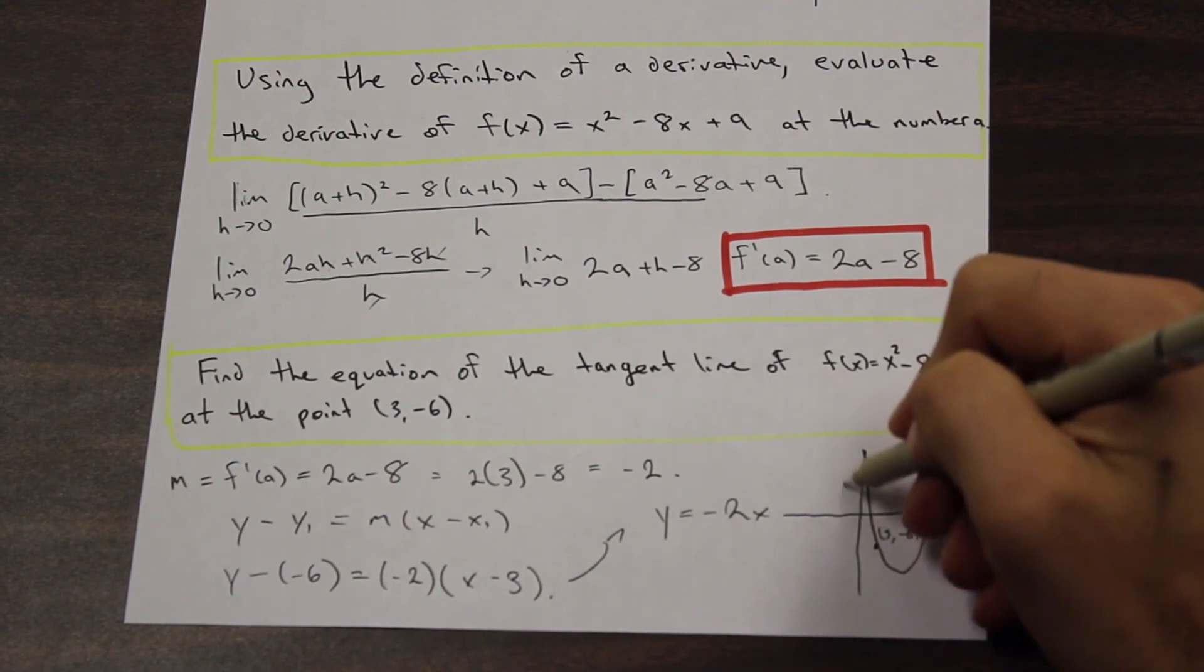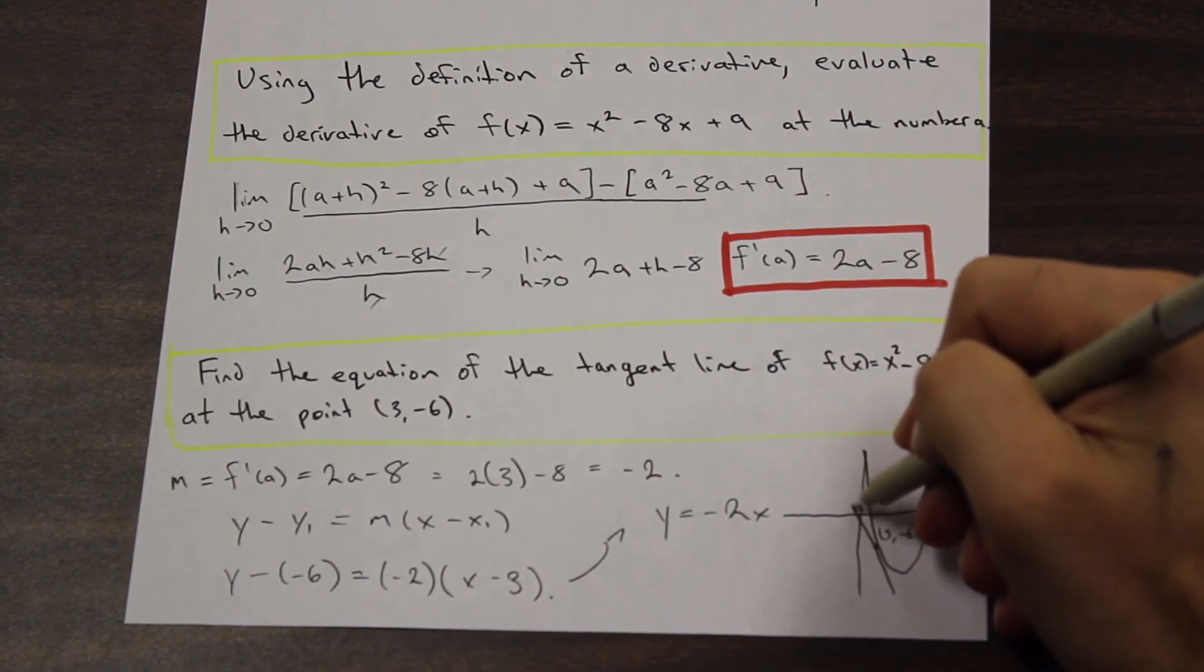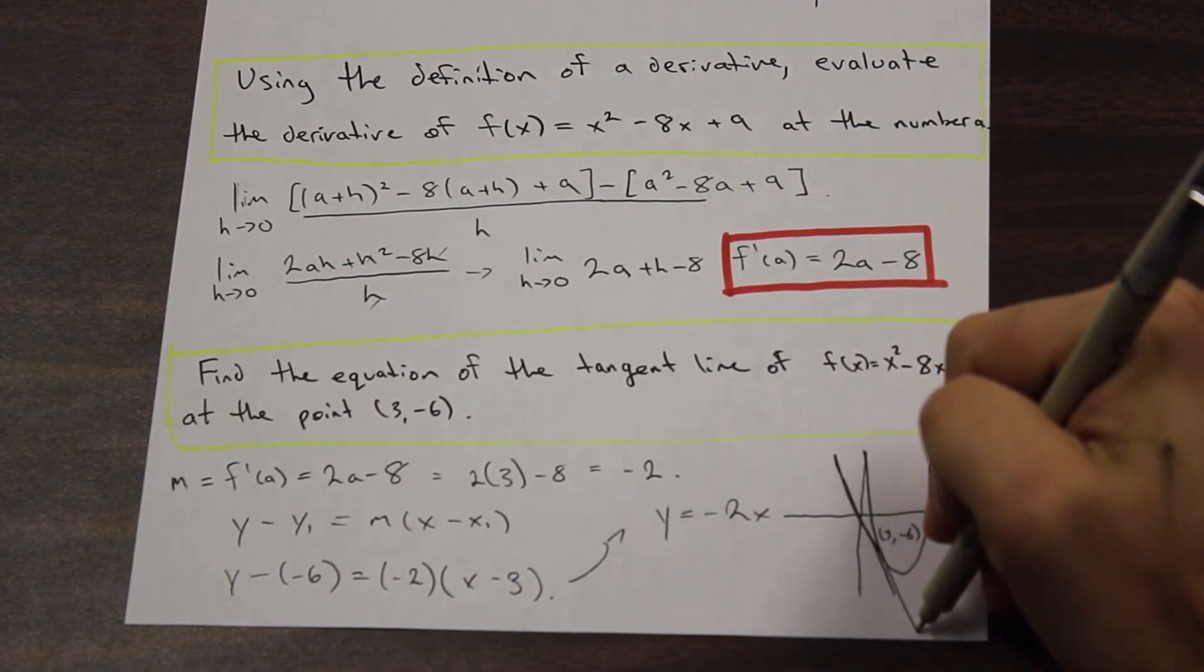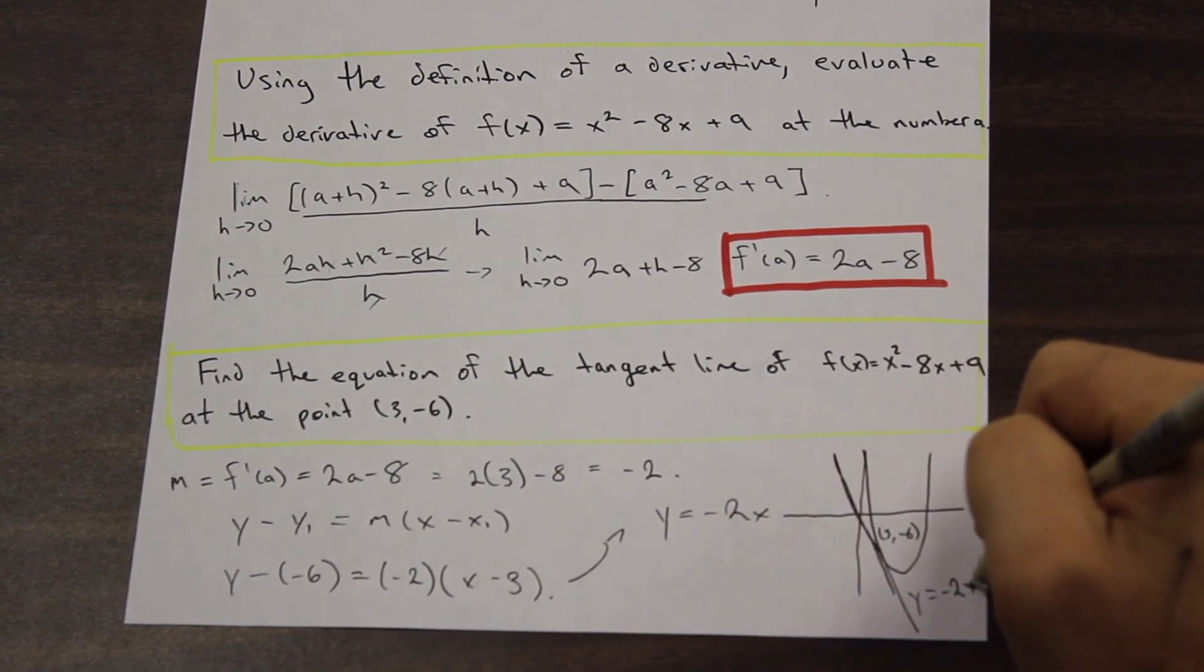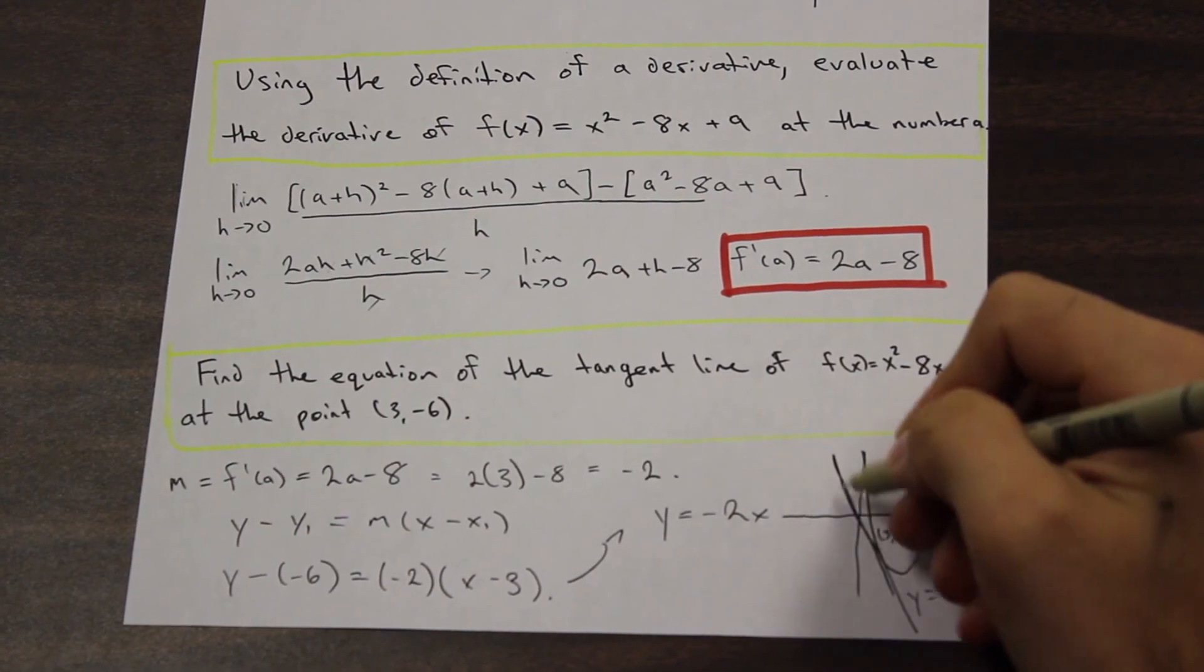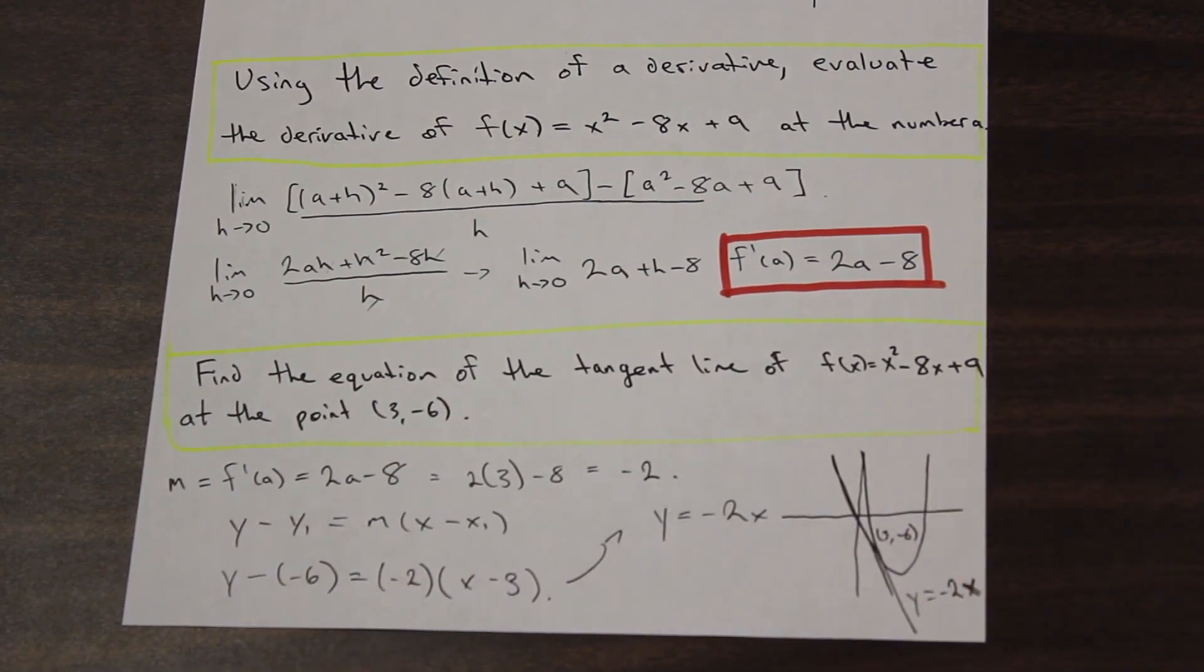So if we say that this point here is (3, -6), that's the point that we were asked to find the tangent line at. The tangent line is going to look like this. That's going to be our tangent. And that's going to be y = -2x. Or the slope of this line is equal to negative 2.